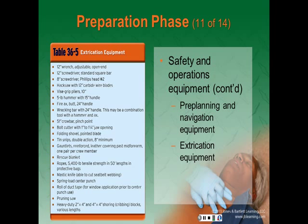Extrication equipment should be located in a weatherproof compartment outside the patient compartment. This is equipment needed for simple light extrication, even if extrication and rescue units are readily available. Table 36-5 lists the items that should be included in this extrication compartment.